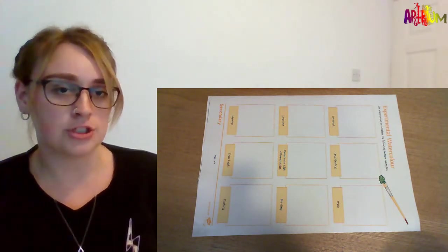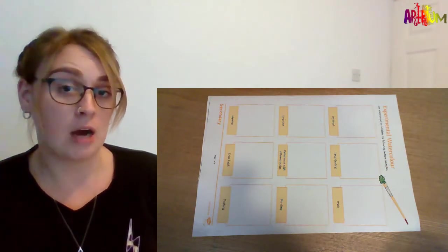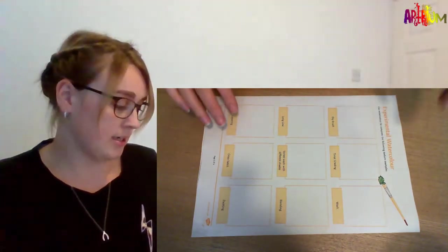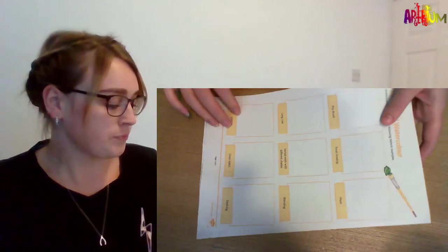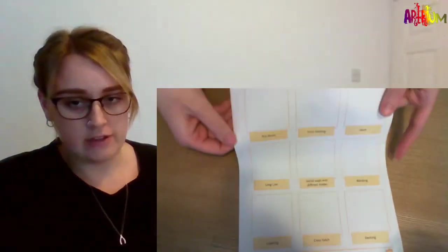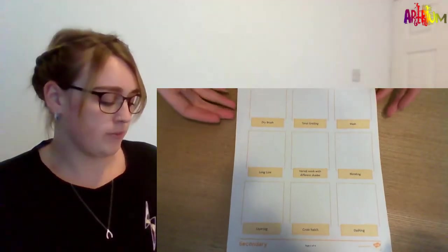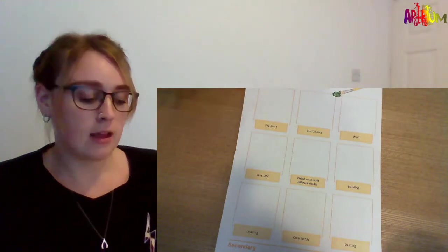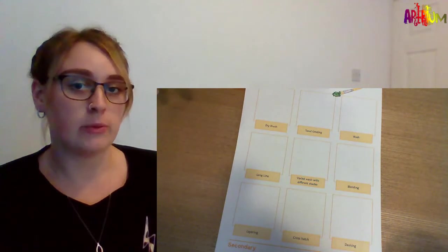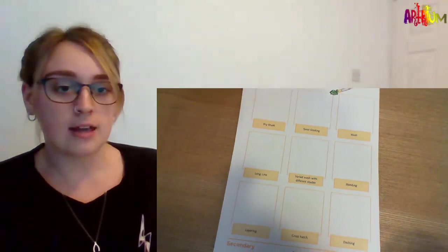This session I am going to talk through a few different techniques we can use when creating our artwork. Now in your pack you should have this sheet and it is an experimental watercolour sheet. There are nine different variations of how you can apply your paint with the different tools that you have. I'm going to go through very quickly and show you all of these techniques and then you can just rewind later on if you want to go back to any of them to try out.